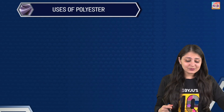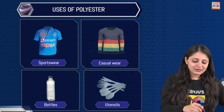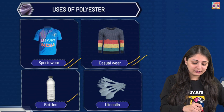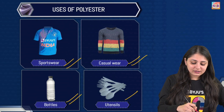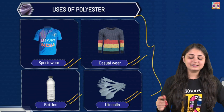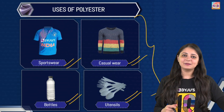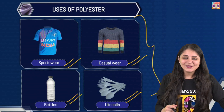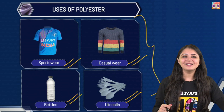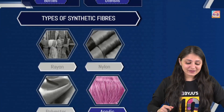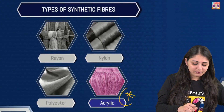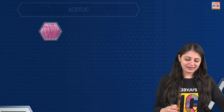Now talking about the uses of polyester: making sportswear, casual wear, bottles, utensils — all these can be made by using polyester. So this was all about polyester and now we'll move on to acrylic, another really important synthetic fibre.